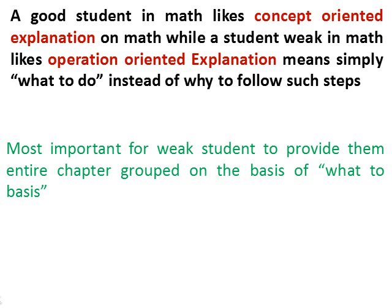A math chapter always contains 20 to 30 types of problems, and every problem has its own typical solving route. Through trial and error I have found that grouping the entire chapter based on mathematical operation, and then regrouping by types, is an excellent method for a weak student. This makes things easier because the student becomes able to learn what course of action should be taken and where — and thus becomes able to solve questions like a good student, though their perception differs.